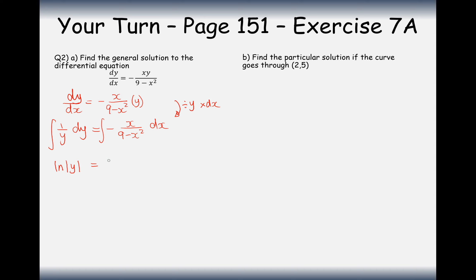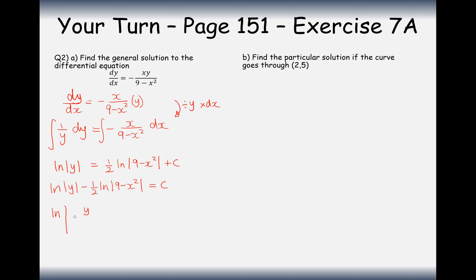On the right-hand side it's a ln-type integral. The derivative of the bottom is minus 2x, so it becomes a half ln|9 minus x squared|, plus c. The minus signs counteract, so it's positive. Subtracting the ln term onto the left-hand side and simplifying: the half moves in as a square root, and subtracting ln's means dividing inside the log. So we get ln of |y over the square root of (9 minus x squared)| equals c.